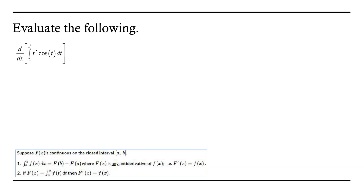Before we dig into this, I want to remind us about the second part of the fundamental theorem of calculus. If we have a function defined as an integral where the lower limit of integration is constant and the upper limit is a variable, then the derivative of that function can be found by simply substituting in x for the variable in the integrand — in this case, substituting x for the variable t.